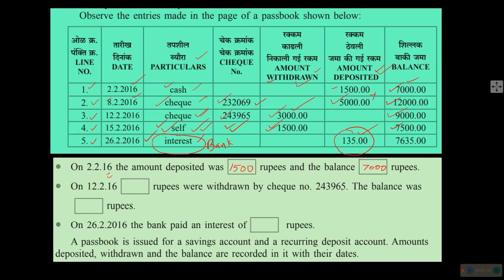On 12th February, rupees 3,000 were withdrawn by cheque number 243965, and the balance on 12th is 9,000. On 26th February, the bank paid an interest of rupees 135. So a passbook gives us a clear idea about all the transactions that happened in the bank.